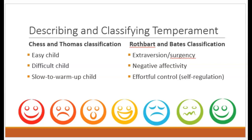A slow to warm up child has a low activity level, is somewhat negative, and displays low intensity of mood. They're not as adaptable as the easy child, but not as intense about it as the difficult child.